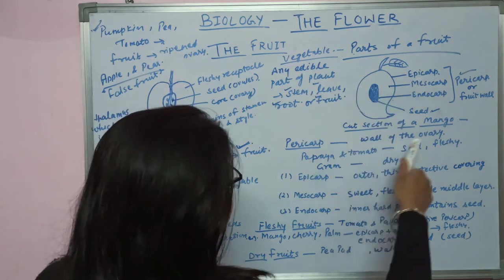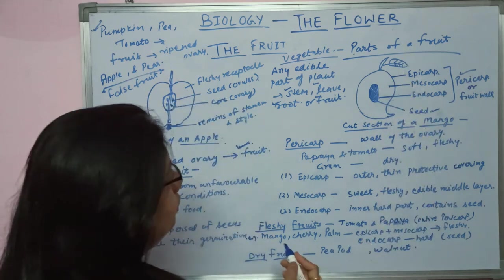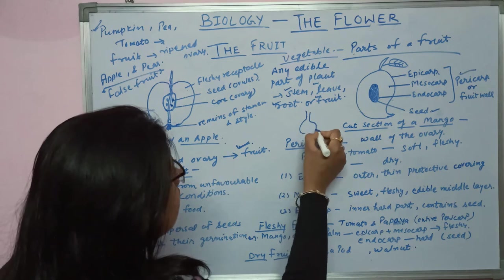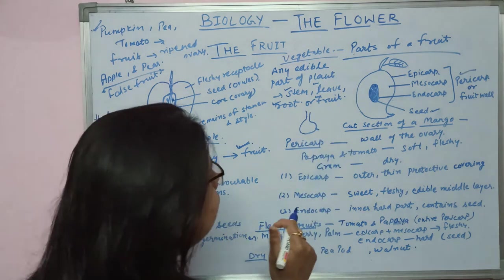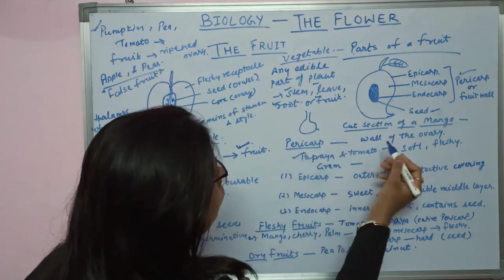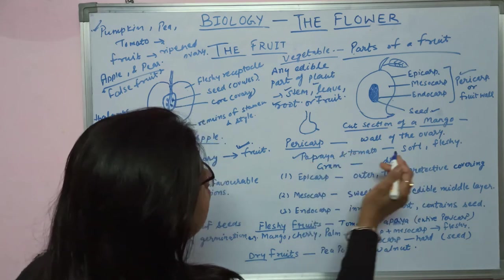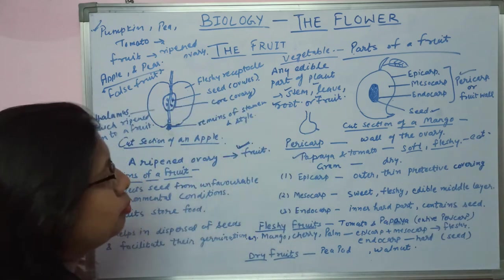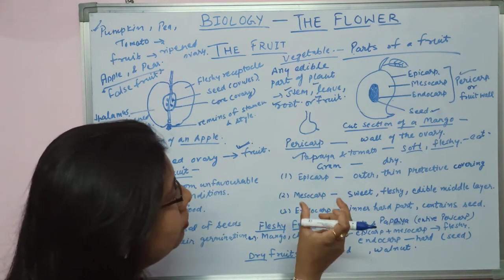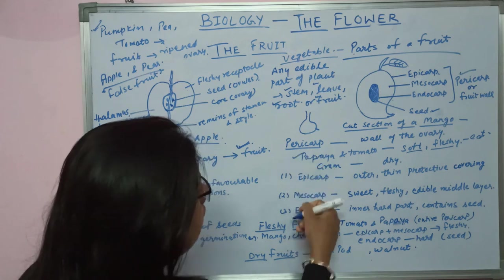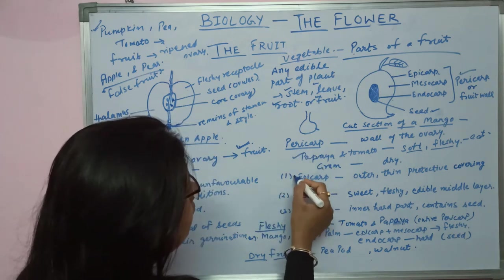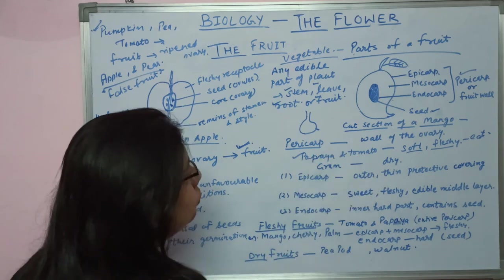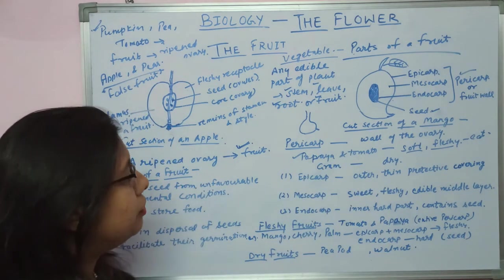The pericarp is the wall of the ovary. After fertilization, the wall of the ovary changes into pericarp. In some fruits like papaya and tomato, the whole of the pericarp is very soft and fleshy, which we mostly and commonly eat. In papaya and tomato fruit, the pericarp is very soft and fleshy, containing all three layers — epicarp, mesocarp, and endocarp — all very soft and fleshy.